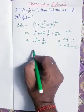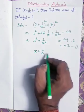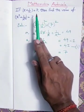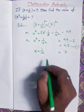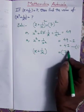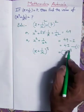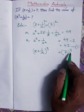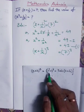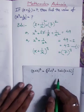Again writing: x plus 1 by x is equal to 7, this value is already given. Now I am doing cubing on both sides. By cubing both sides, this is in the formula a plus b whole cube. The formula of a plus b whole cube is a cube plus b cube plus 3ab into a plus b.